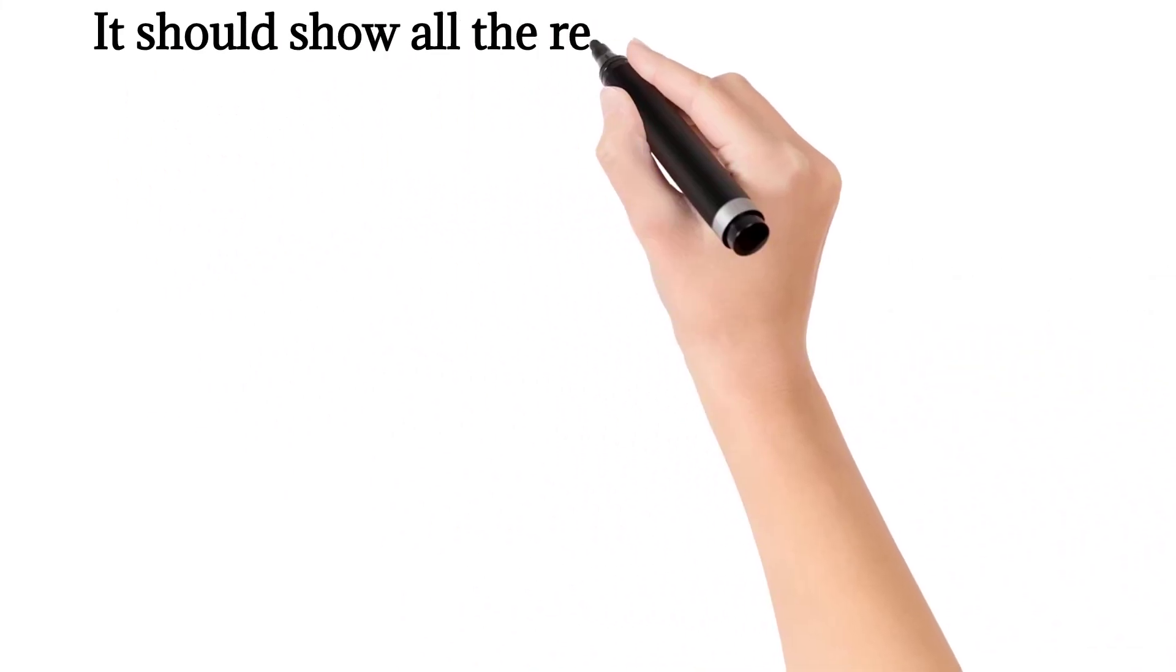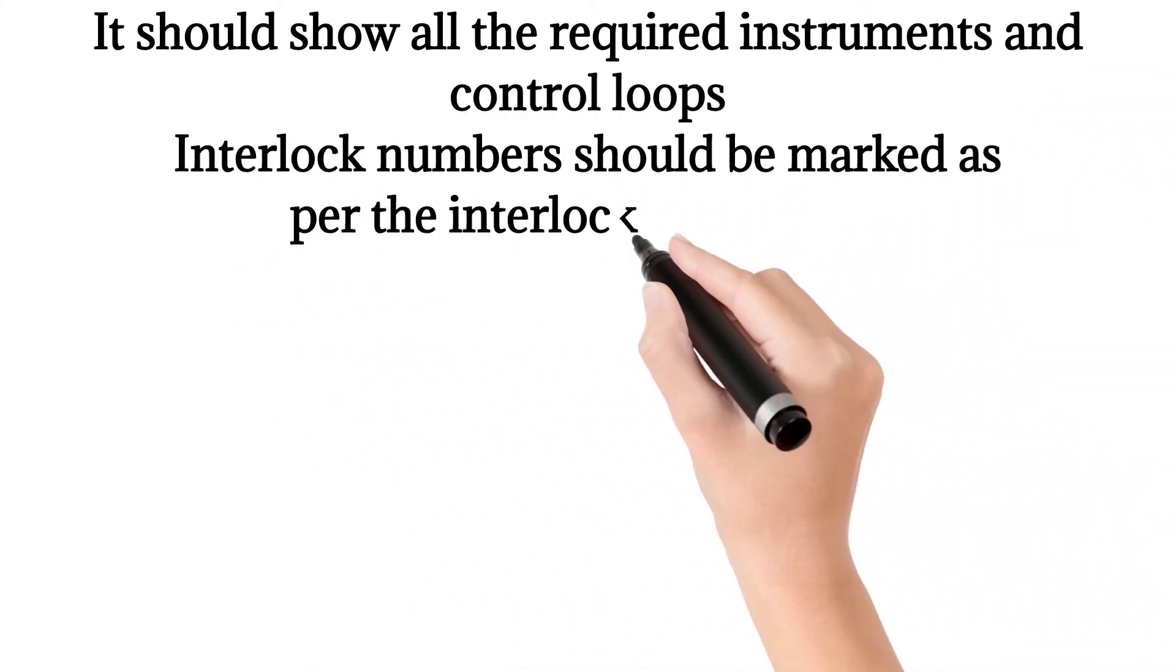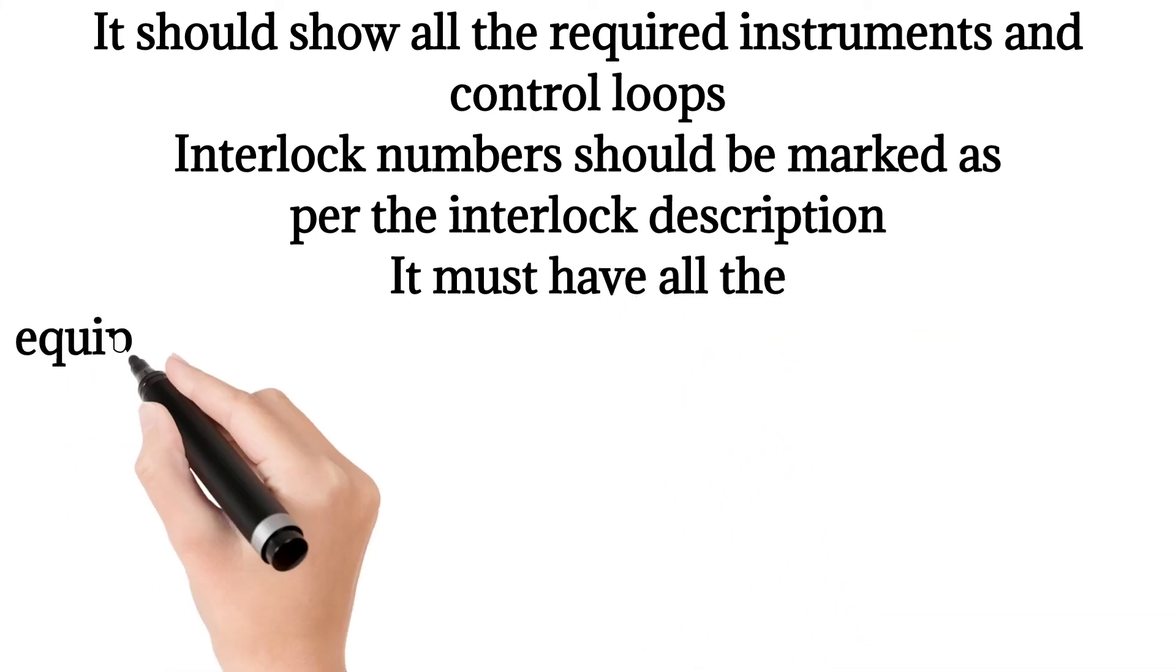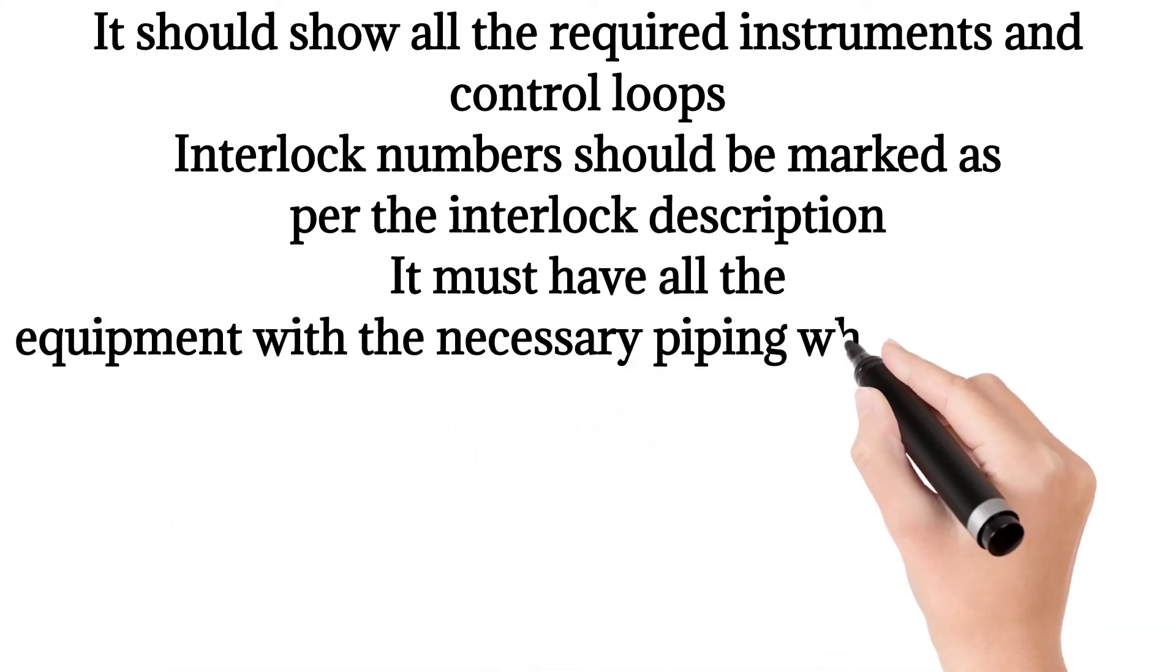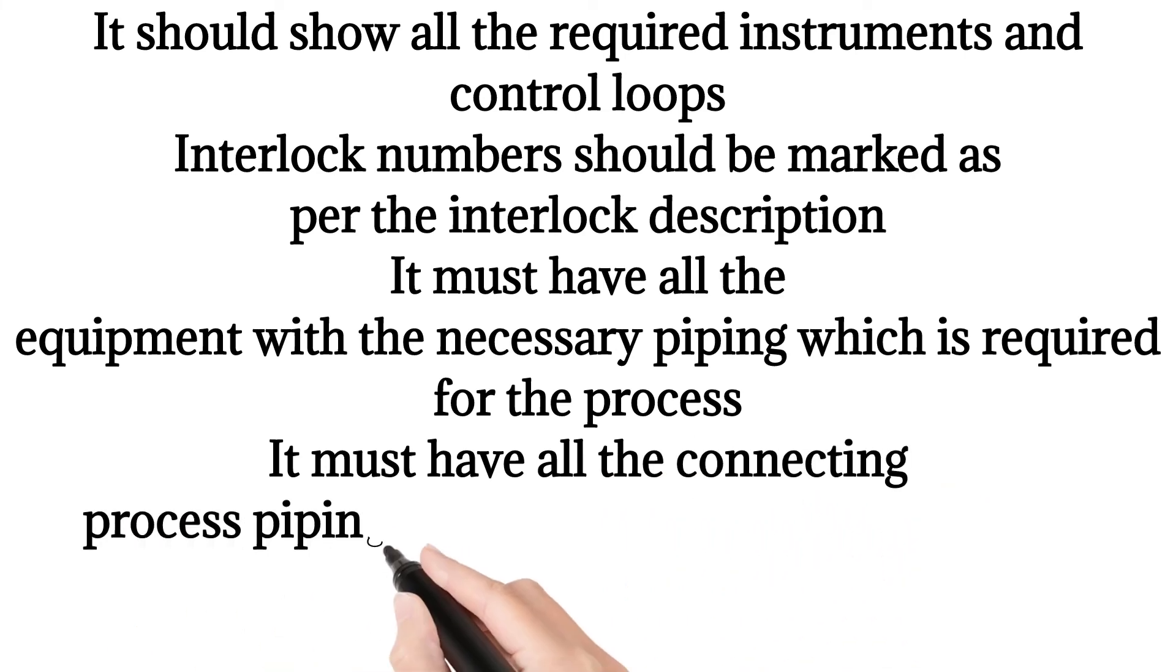It should show all the required instruments and control loops. Interlock numbers should be marked as per the interlock description. It must have all the equipment with the necessary piping which is required for the process. It must have all the connecting process piping which is required to carry out the process.